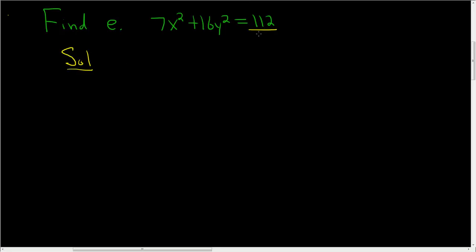So we want to make this a 1, so we'll divide by 112. Divide by 112, and divide by 112. So 7 goes into 112 16 times, so you get x squared over 16 plus, and then this will be y squared over 7, and this is equal to 1.